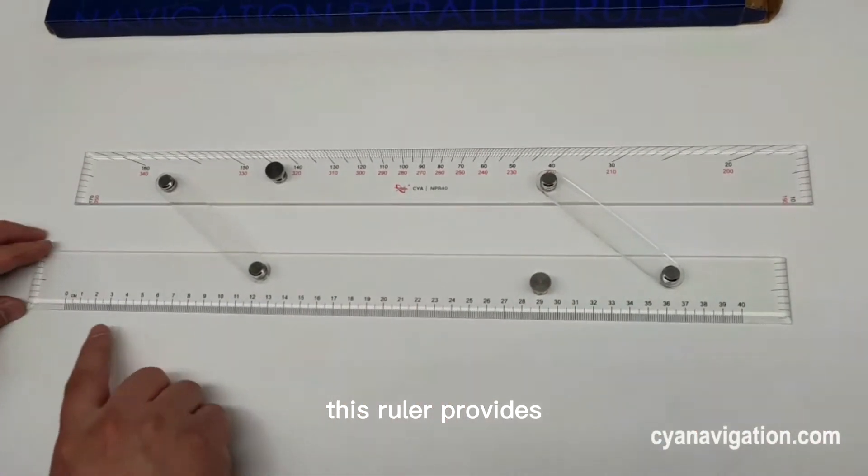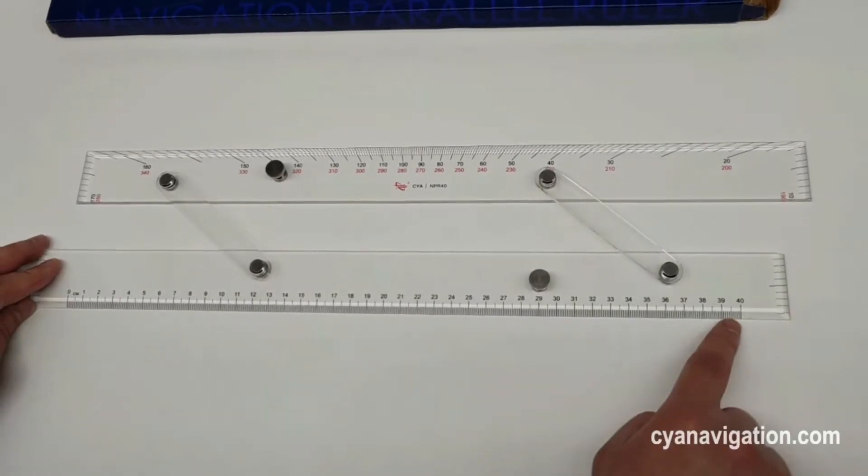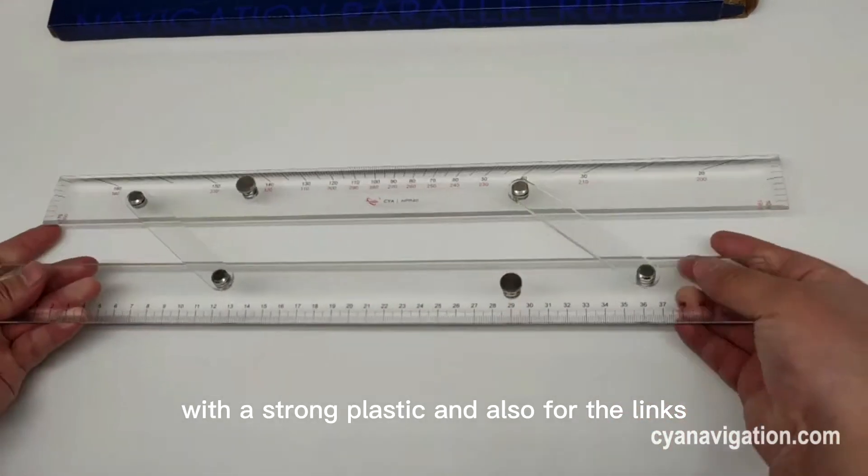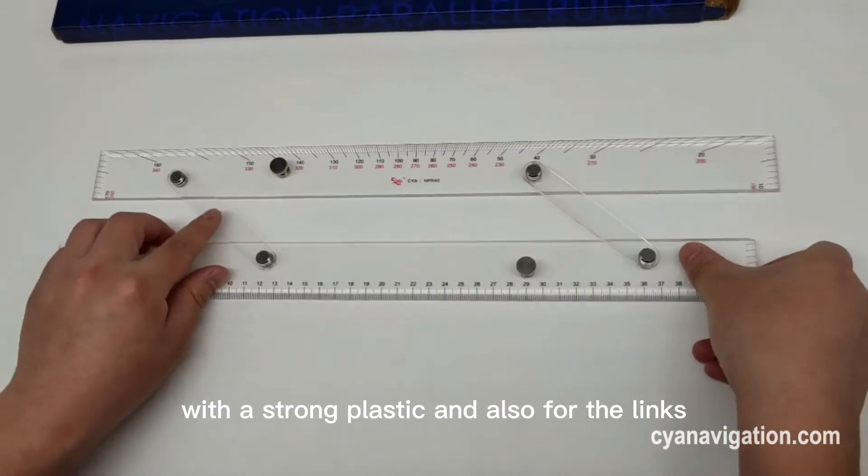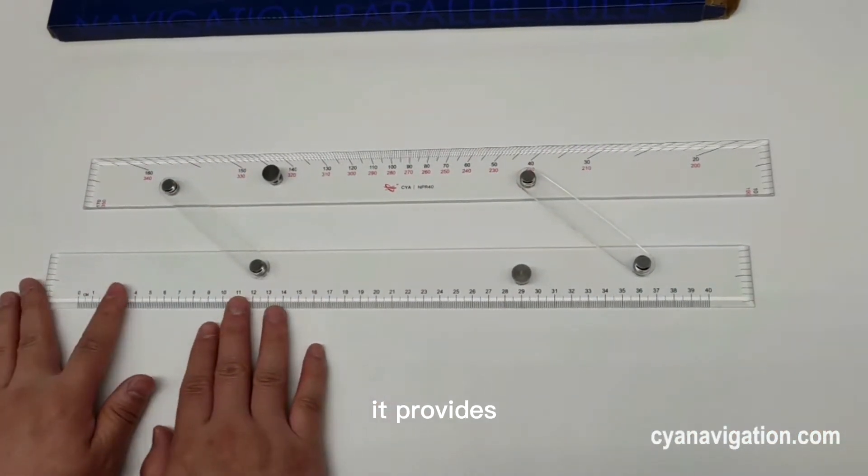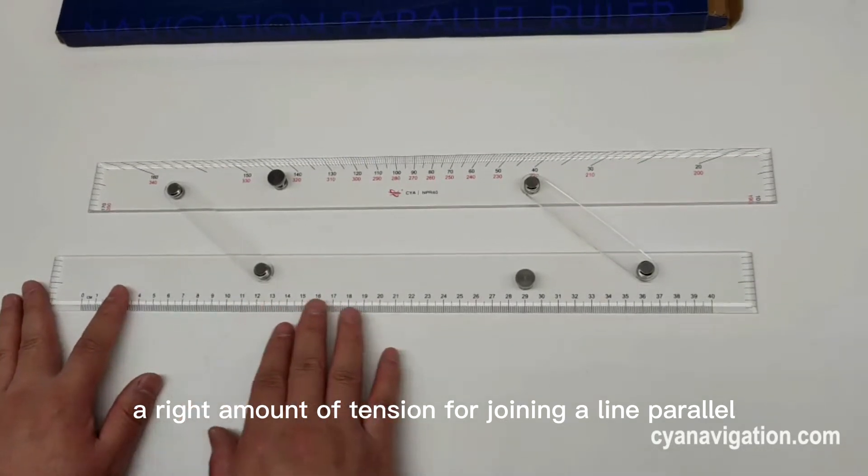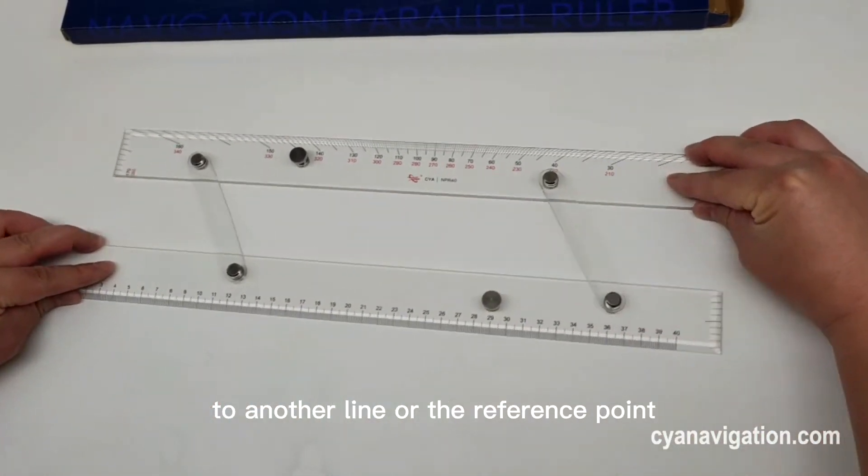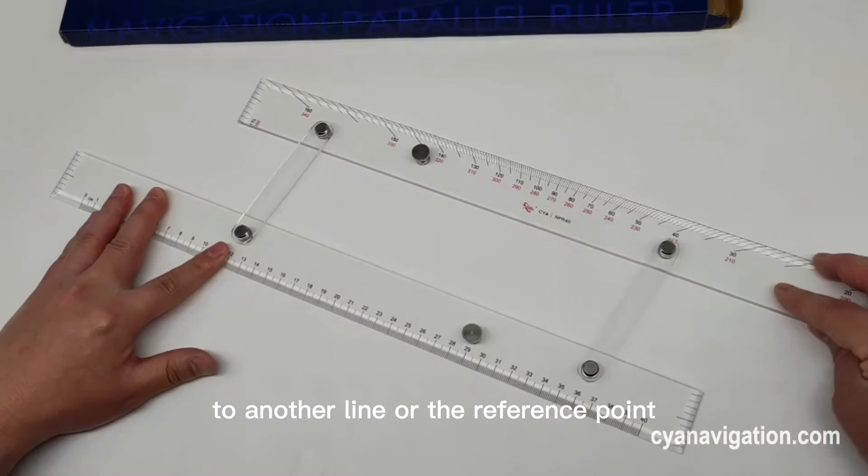This ruler provides precise measurement with strong plastic and also for the links. It provides the right amount of tension for drawing a line parallel to another line or the reference point.